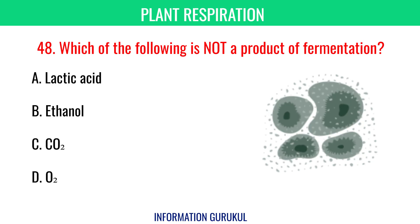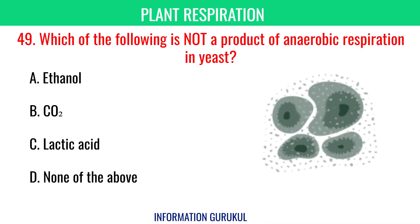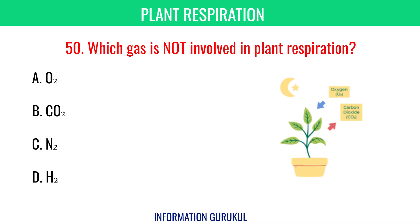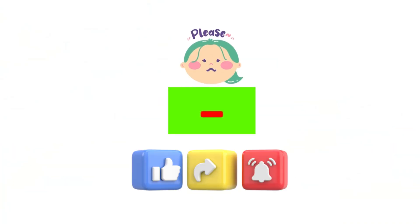Which of the following is not a product of fermentation? Oxygen. Which of the following is not a product of anaerobic respiration in yeast? Lactic acid. Which gas is not involved in plant respiration? Nitrogen. If you like this video, motivate us by liking, sharing, and subscribing to our channel Information Gurukul. I'll see you next time.